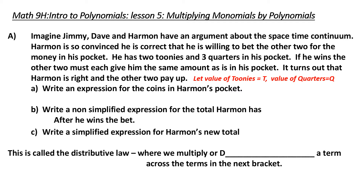He has two toonies, so the value would be 2 times t. And he has three quarters, so the value would be 3 times q. Next, write a non-simplified expression for the total Harmon has after he wins the bet. He starts out with two toonies and three quarters.